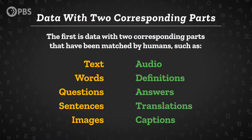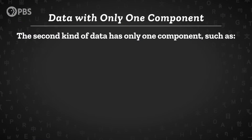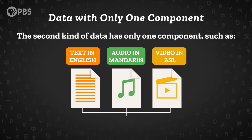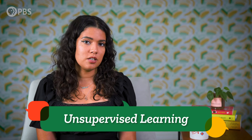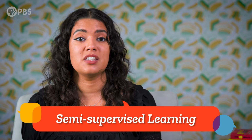In any kind of machine learning, training data is really important, and there are two kinds of data we can use. The first is data with two corresponding parts that have been matched by humans, such as text with audio, words with definitions, questions with answers, sentences with translations, or images with captions. Using parallel data like this is known as supervised learning — it's great, but it can be hard to find enough data that has both parts, since some humans have to create all of these pairs. The second kind of data has only one component, like a bunch of text or audio or video in one language. Using this kind of non-parallel data is known as unsupervised learning — it's much easier to find, but harder to use to train a computer. So researchers often use a mix of both: a smaller amount of parallel data to get things started, and then a larger amount of non-parallel data. This combination is called semi-supervised learning.